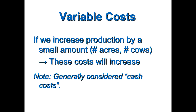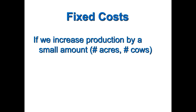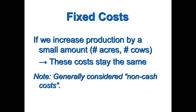Most of the time, variable costs are what you'd consider cash costs. Fuel is the perfect example — if I increase my acres by 10 or 50, you can pretty well know how much extra fuel you're going to have. Seed for reseeding every four or five years is the same type of thing. Fixed costs are kind of the opposite: if you increase production a little bit, those costs might move a little but in general they're not going to change much — generally your non-cash costs.